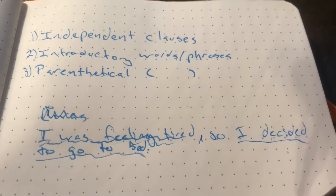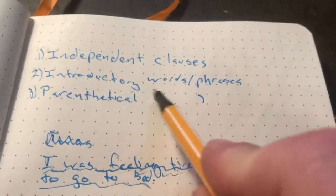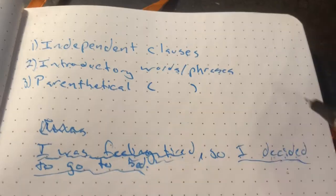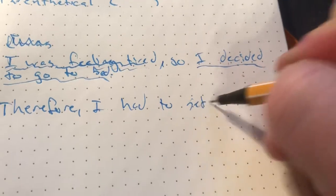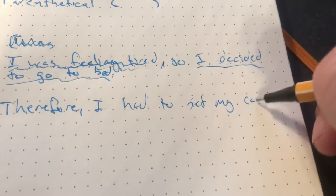What about this? Let's take a look at an introductory word or phrase. A classic one would be like, therefore. Therefore, I had to set my car on fire. Therefore, comma, I had to set my car on fire. Not getting a good focus here. Sorry, guys. That's a good example of like, that's an introductory word, right?